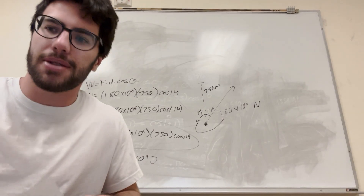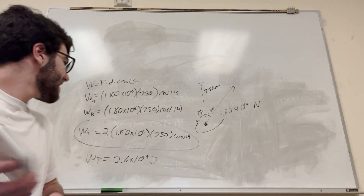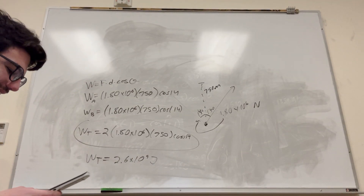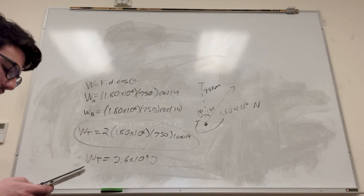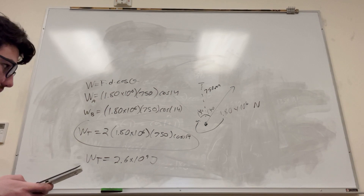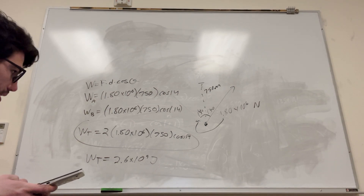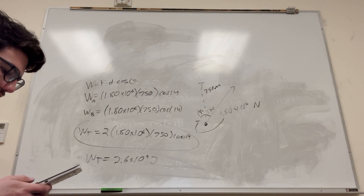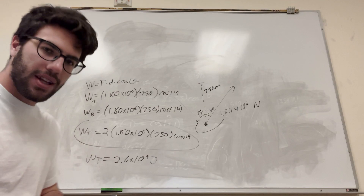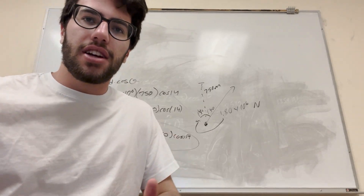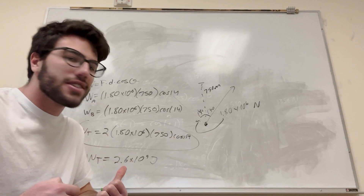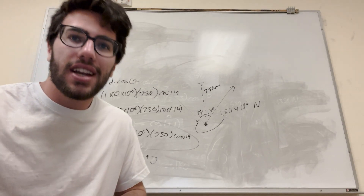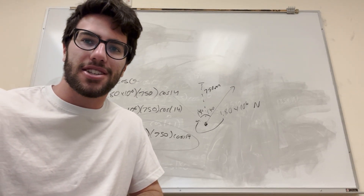I'm going to plug this into my calculator just to confirm — 1.80 times 10 to the 6, times 750, times cosine of 14. Yeah, that looks right. All right, so that's how you do these kinds of problems. You should go learn how to use this formula correctly. Good luck on your physics homework, guys.